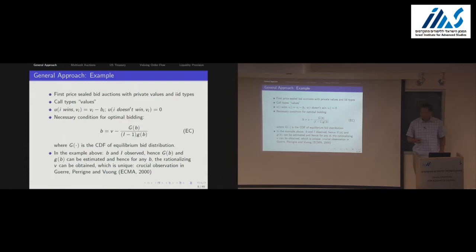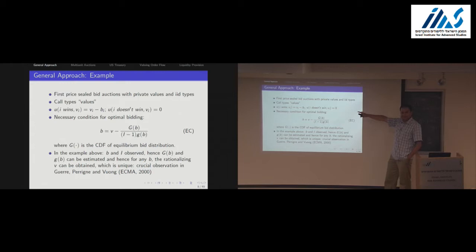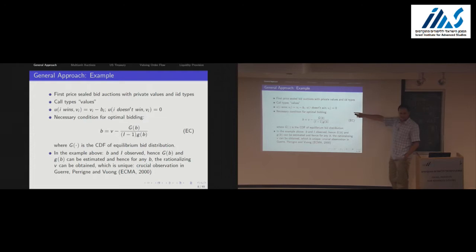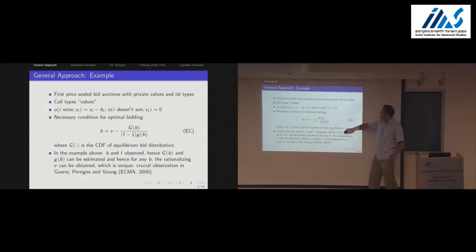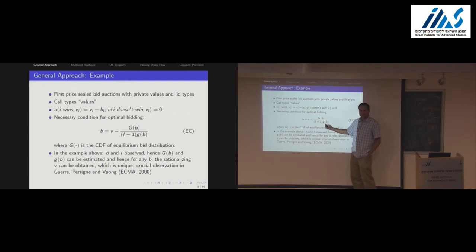Let me give an example. First-price sealed-bid auction, IID types, private values — the easiest case. The set of alternatives is: i wins or i doesn't win. Note that assuming the payoff of not winning is zero already embeds something you might worry about — for example in a merger contest where you care differently about who else acquires the firm, this wouldn't be an exhaustive description. The necessary condition for optimal bidding is the famous expression: bid equals value minus a markup, where the markup is related to the distribution of bids.